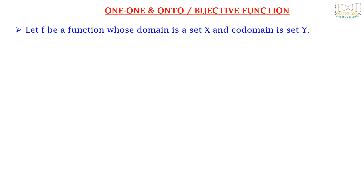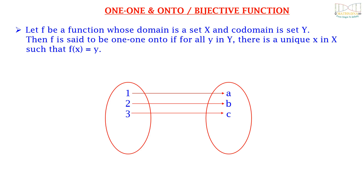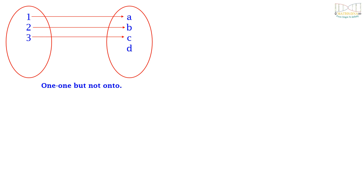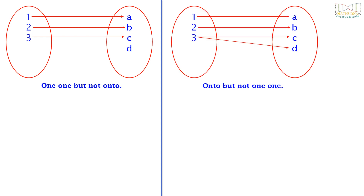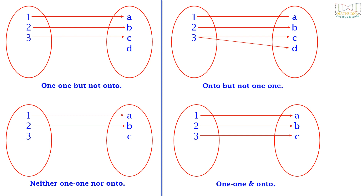Now, what are 1-1 and onto or bijective functions? Let f be a function whose domain is a set X and co-domain is a set Y. Then f is said to be 1-1 onto if for all y in Y there is a unique x in X such that f(x) is equal to y. Remember, for onto functions it was just 'there exists an x in X', but here it is a unique x. We can see from diagrams: a function that is 1-1 but not onto, a function that is onto but not 1-1, a function that is neither 1-1 nor onto, and a function that is both 1-1 and onto.